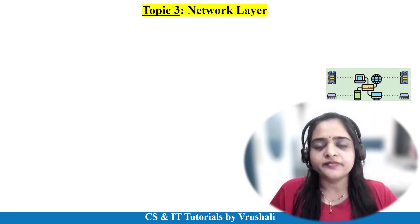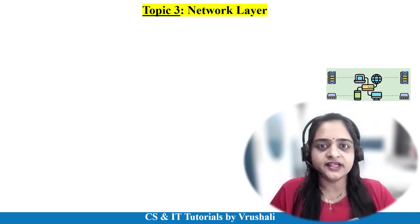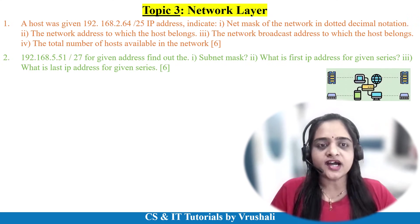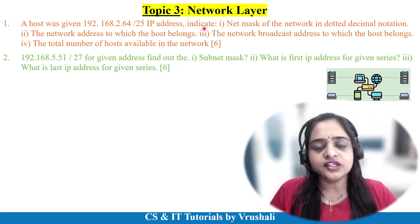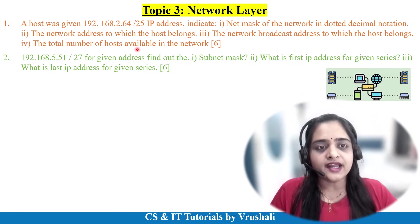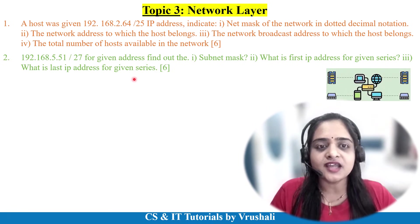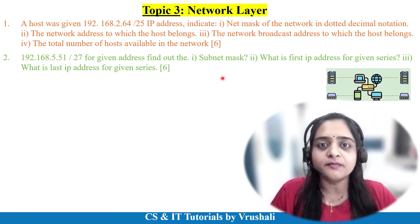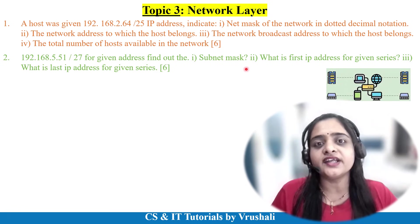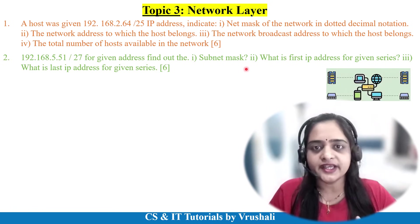The next unit is network layer, where again 90% are theoretical and 10% are numerical questions. For numerical questions, an IP address is given and you have to find the net mask, network address, broadcast address, and total number of hosts. Another question gives an IP address and asks for the subnet mask, first IP address, and last IP address in a given series. Prepare these two question types compulsorily — they are repeatedly asked for 6 to 8 marks.